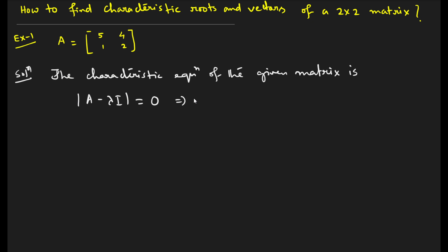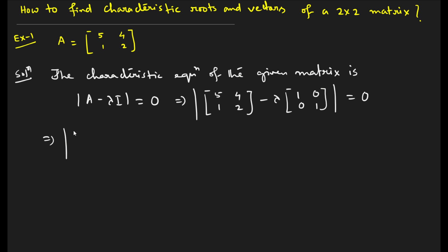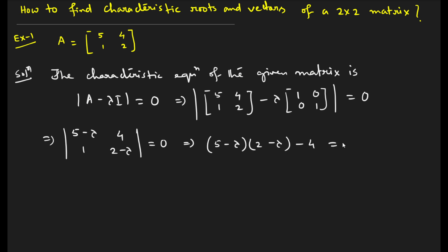So determinant of (A minus lambda I) equals 0. The matrix is [5, 4; 1, 2] minus lambda times the identity matrix [1, 0; 0, 1] equals 0. This gives us [5 minus lambda, 4; 1, 2 minus lambda] equals 0. Expanding the determinant: (5 minus lambda)(2 minus lambda) minus 4 equals 0, which gives lambda squared minus 7 lambda plus 6 equals 0.